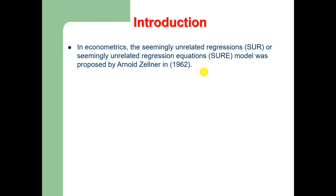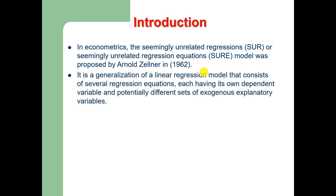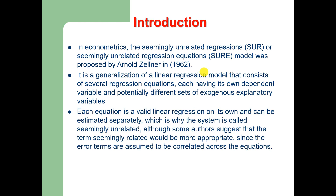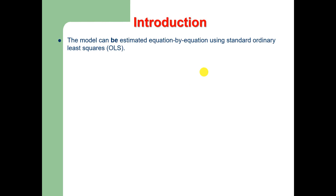In econometrics, the seemingly unrelated regression equations model was proposed by Zellner in 1962. This is the generalization of the linear regression model which consists of several regression equations, each having its own dependent variable and potentially different sets of exogenous explanatory variables. Each equation is a valid linear regression on its own and can be estimated separately, which is why the system is called 'seemingly unrelated' — although some authors suggest 'seemingly related' would be more appropriate since the error terms are assumed to be correlated across the equations.